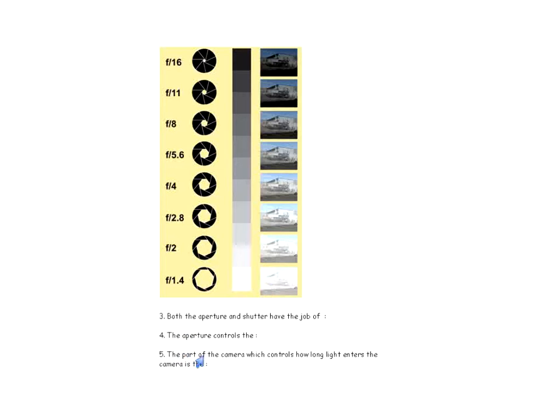The part of the camera that controls how long light enters is the shutter. It's almost like the idea of a window shutter.